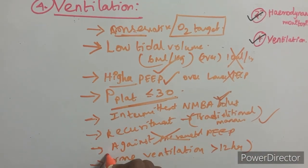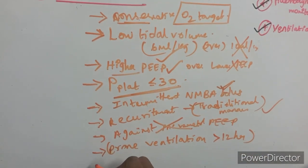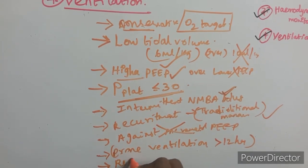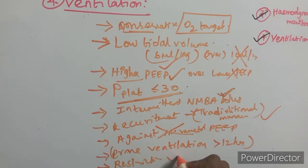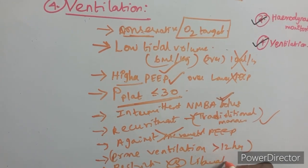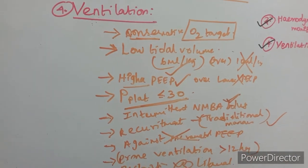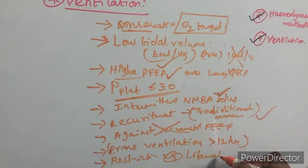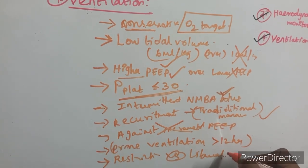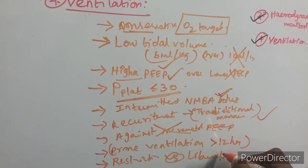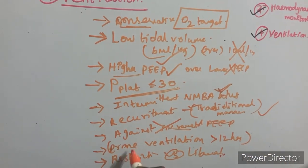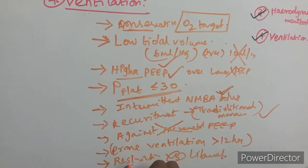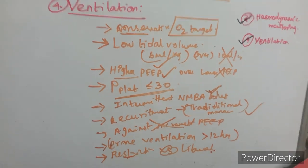Regarding fluid strategy: a liberal fluid strategy should be followed when the patient first presents to the emergency department, especially if there are signs of hypoperfusion. Once the patient is intubated and the acute resuscitation phase is complete, a restrictive fluid strategy should be adopted.